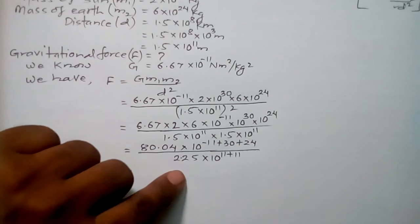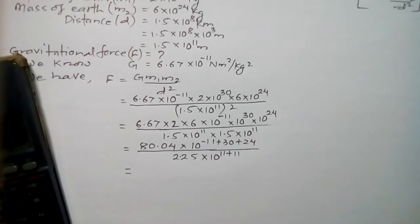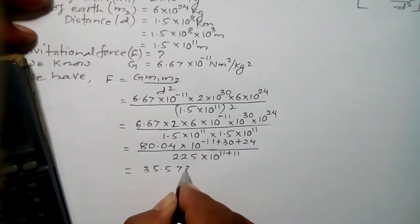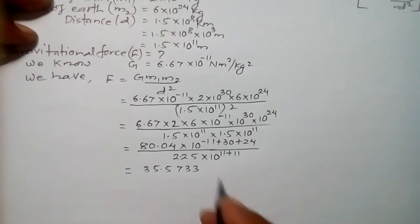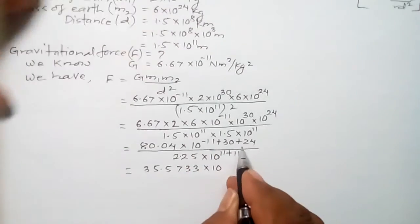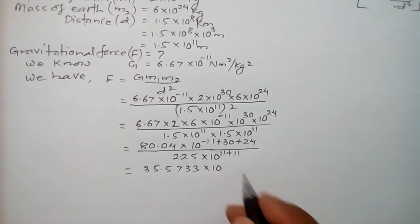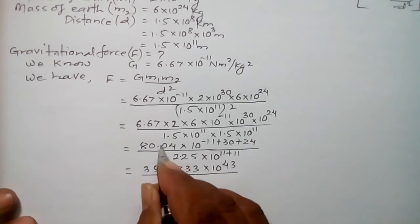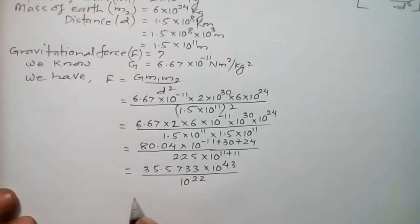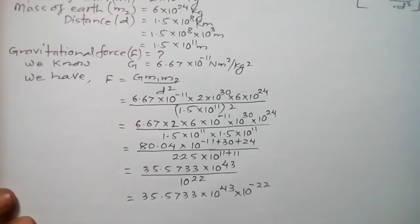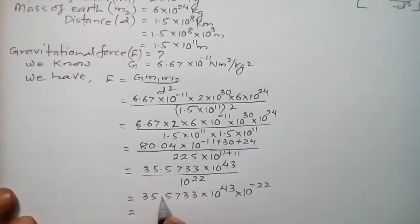Now dividing: 80.04 divided by 2.25 equals 35.573. For the powers of 10 in the numerator: minus 11 plus 30 plus 24 equals 43, giving 10 to the power 43. Dividing by 10 to the power 22 from the denominator is the same as multiplying by 10 to the power minus 22. So we have 35.573 into 10 to the power 43 minus 22, which is 35.573 into 10 to the power 21.